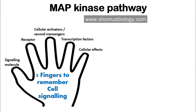The second parameter: let's begin with the signaling molecule for the MAP kinase pathway. The signaling molecules are growth factors, like Epidermal Growth Factor (EGF), Platelet-Derived Growth Factor (PDGF), and Vascular Endothelial Growth Factor (VEGF).